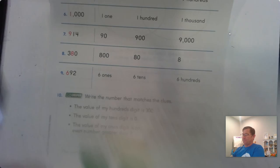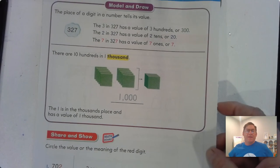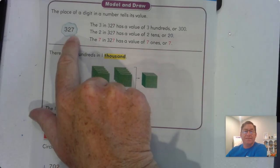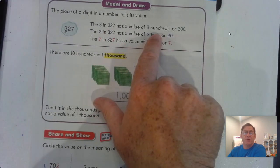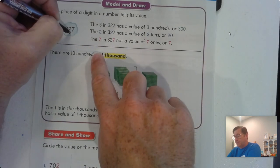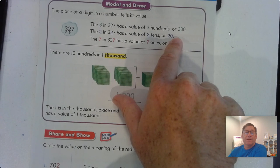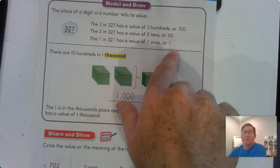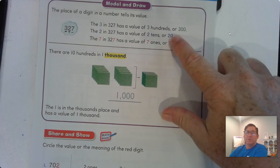Let's look at page 74. The place of a digit in a number tells its value. For instance, three hundred twenty-seven: the three has a value of three hundreds, or three hundred. The two has a value of two tens, or twenty. The seven has a value of seven ones, or seven. Three hundred twenty-seven.